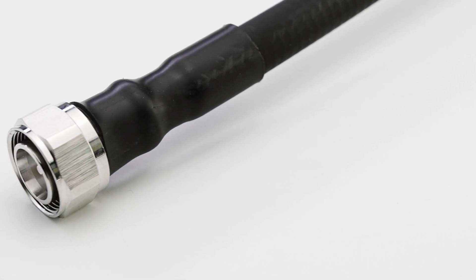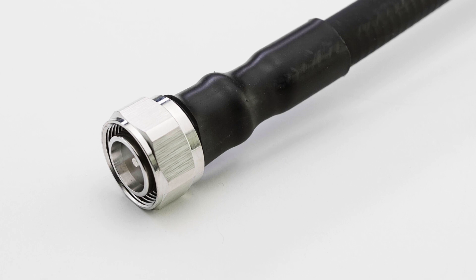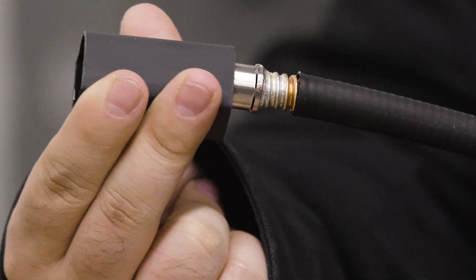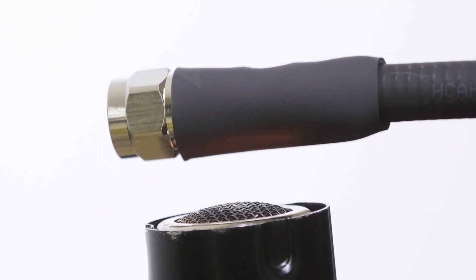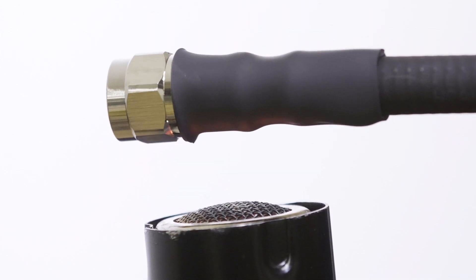It protects against abrasion, dust, and water ingress. It also acts as a strain relief. Heat shrink is commonly used during cable assembly, manufacturing, and cable repair.